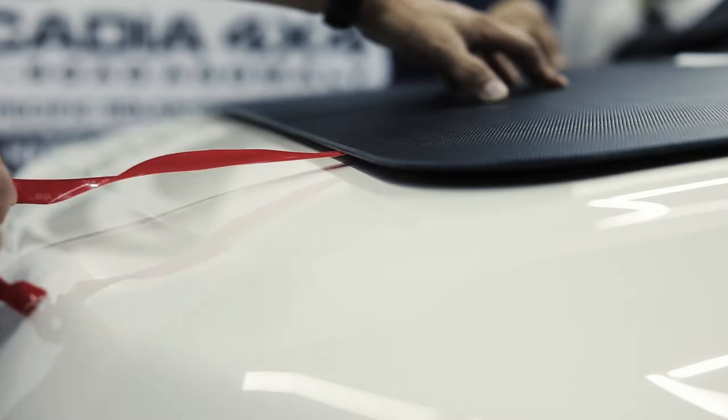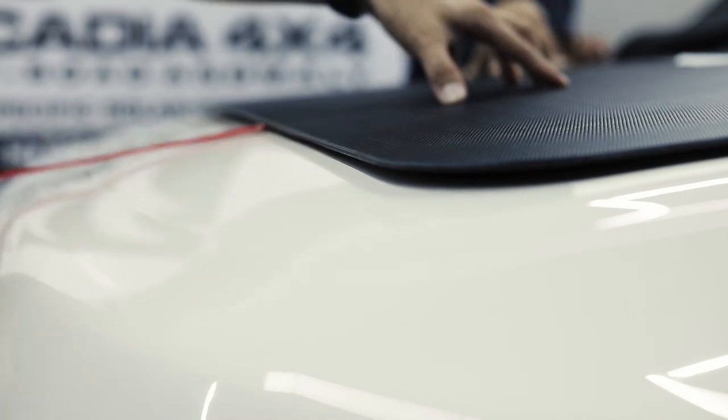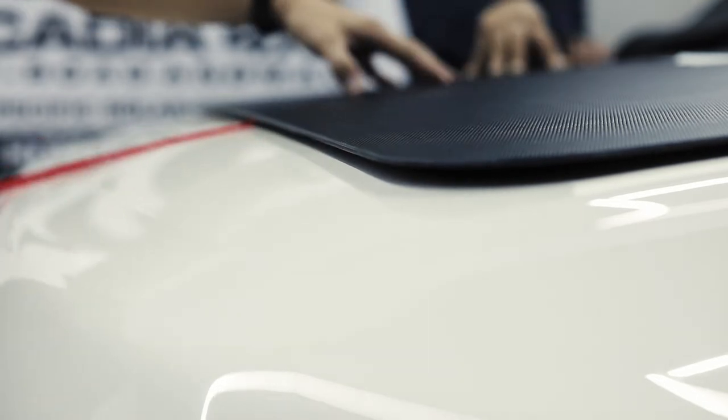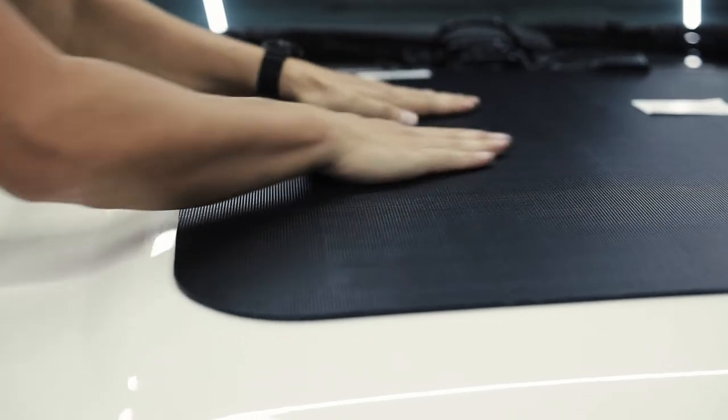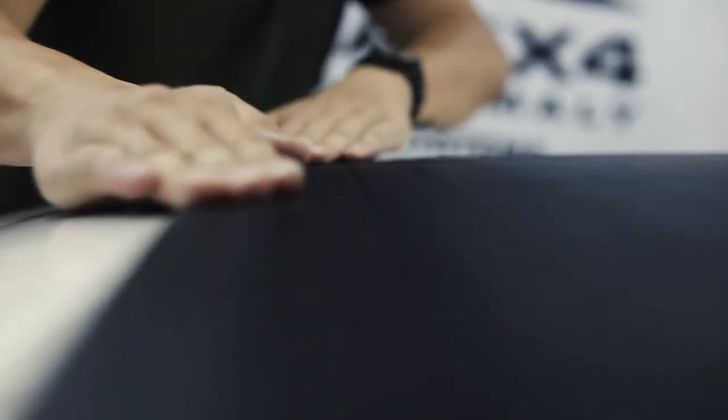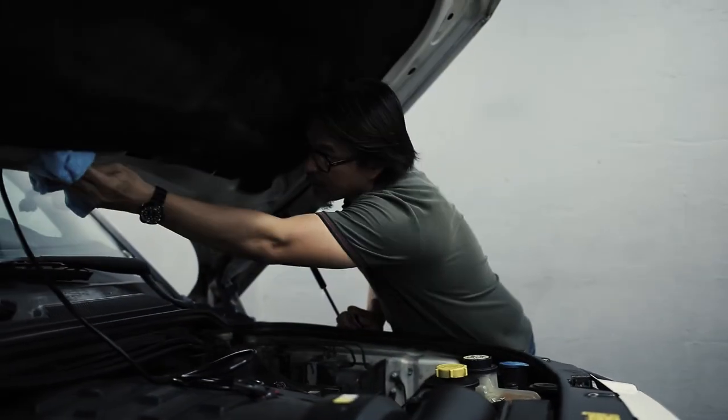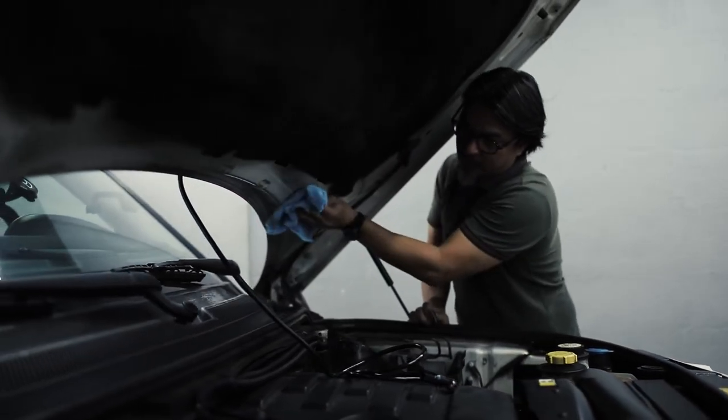Once satisfied with the location, start pressing down the edges all around. Once that's done, we move to cabling the panel and connecting it to the MPPT charger. First, clean the surface for the supplied zip tie clips.